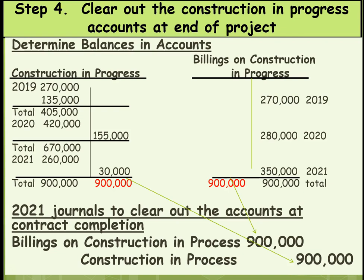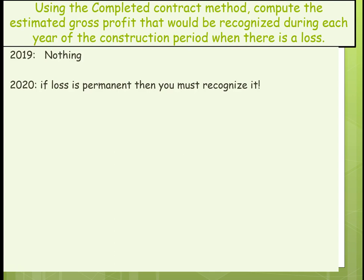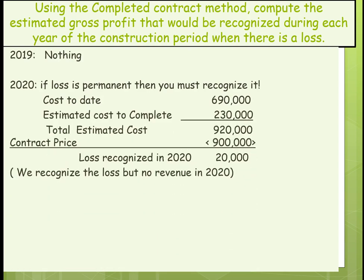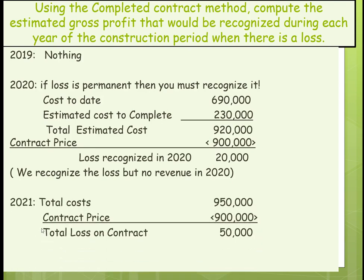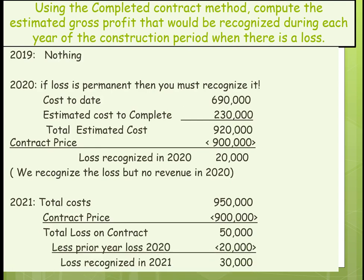Now, what about the completed contract method? For 2019 we do nothing because there was a profit. In 2020, if the loss is permanent, you must recognize it. Cost to date is $690,000 and estimated cost to complete is $920,000. The contract price is $900,000, so we recognize a loss of $20,000 in 2020. Remember: we recognize the loss, not the revenue. In 2021, total cost is $950,000, contract price is still $900,000, giving a cumulative loss of $50,000. Subtracting what was recognized in the prior year, we recognize an additional $30,000 loss in 2021.